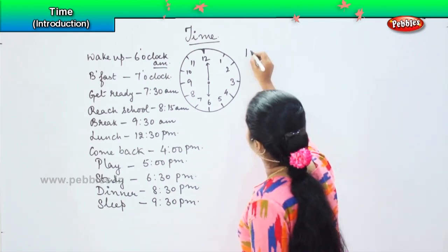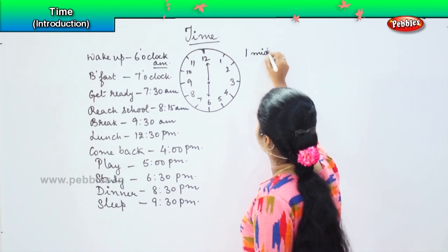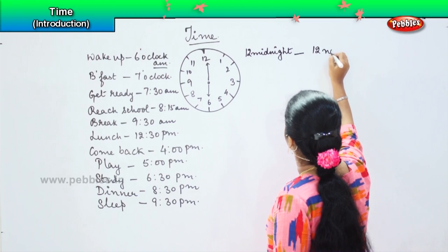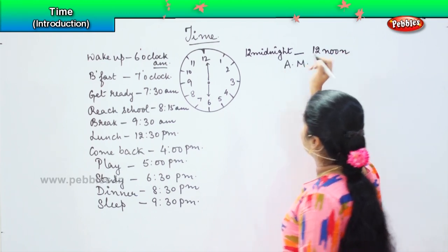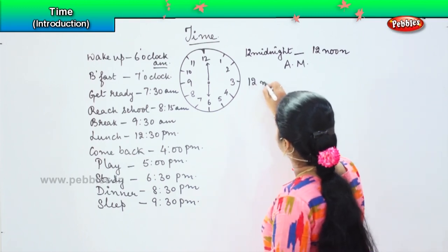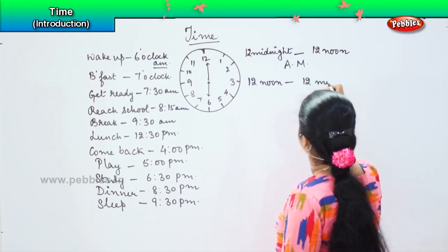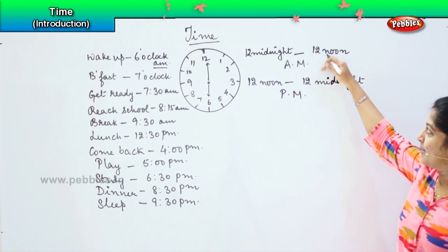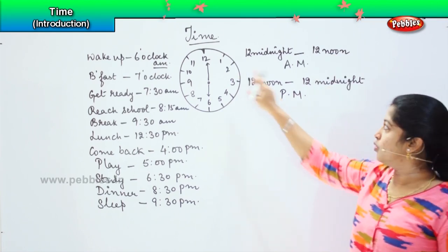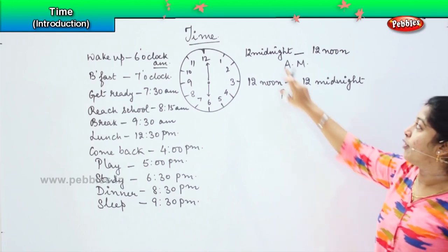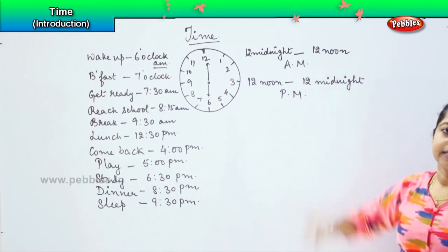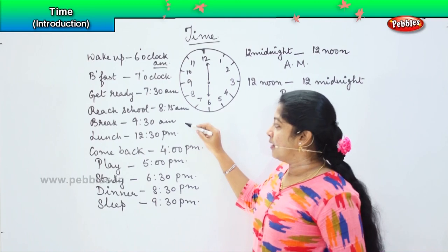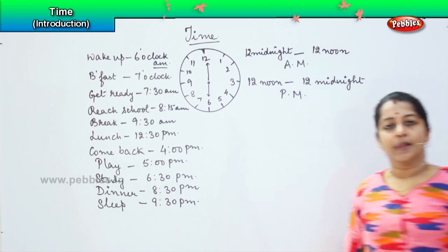From 12 midnight to 12 noon, it is called a.m. And from 12 noon to 12 midnight, it is called p.m. So a.m. is ante-meridiem and p.m. is post-meridiem. That's why in the schedule, from waking up till the break it is a.m., and post-lunch till sleep it goes in p.m.